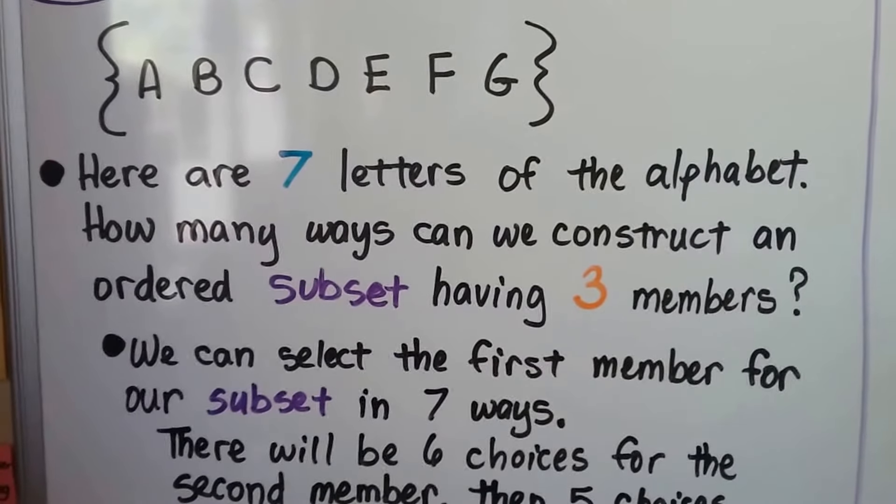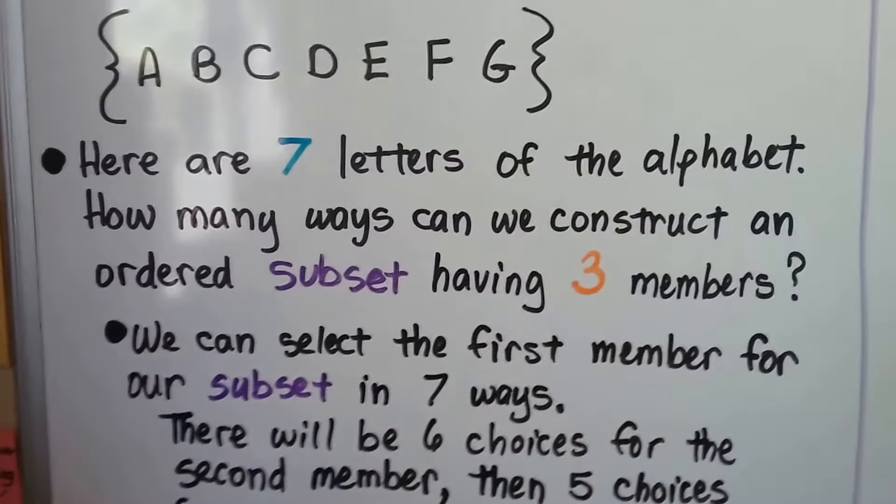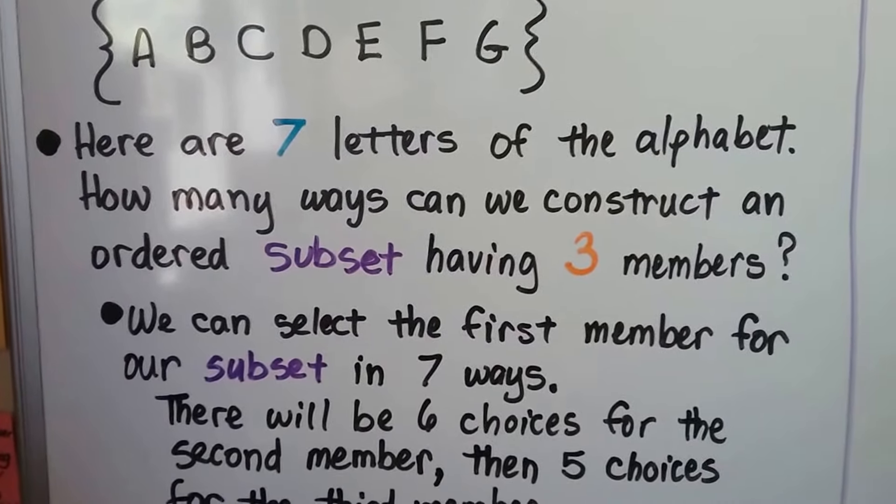We can select the first member for our subset in seven ways. We could choose any one of these seven. There'll be six choices for the second member, then five choices for the third member.